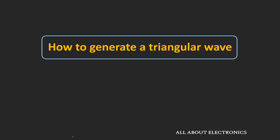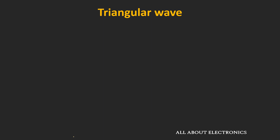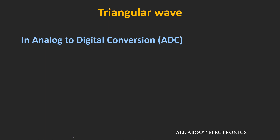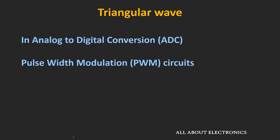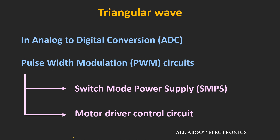Welcome to the YouTube channel all about electronics. In this video we will learn how to generate a triangular wave. Similar to the square wave and the sine wave, this triangular wave is also very useful in certain applications. Because of its linearity, this triangular wave is useful in analog-to-digital conversion as well as in many PWM circuits. These pulse width modulation circuits can be used for designing a switch mode power supply or for controlling the speed of a motor.